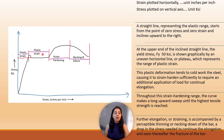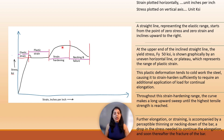The plastic deformation tends to cold-work steel, causing it to strain harden sufficiently to require an additional amount of load for continuous elongation. Throughout this strain hardening range, the curve makes an upward inclination to the highest tensile strength. Further elongation is accompanied by necking down of the bar, a drop in the stress needed to continue elongation, and soon there is a fracture of the bar.